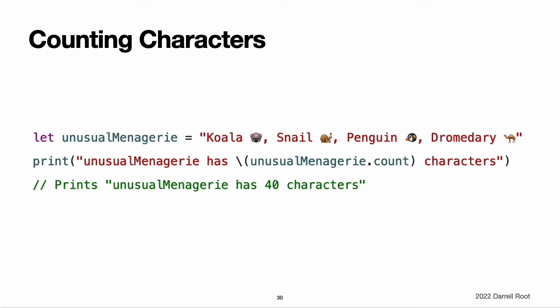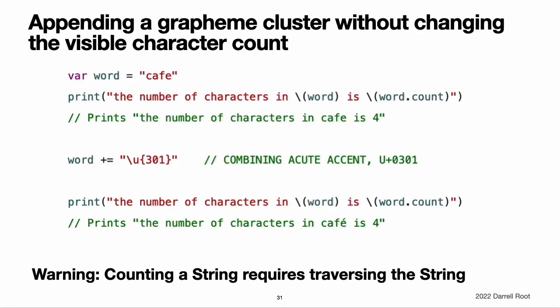Counting characters. To retrieve a count of the character values in a string, use the count property of the string. Note that Swift's use of extended grapheme clusters for character values means that string concatenation and modification may not always affect a string's character count. For example, if you initialize a new string with the four-character word "cafe" and then append a combining acute accent to the end of the string, the resulting string will still have a character count of four, with the fourth character being E with accent, not E.